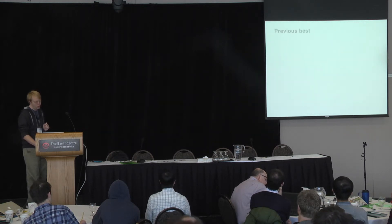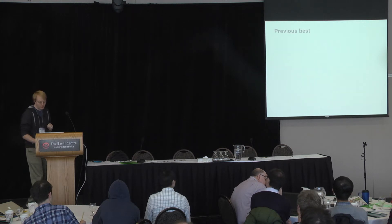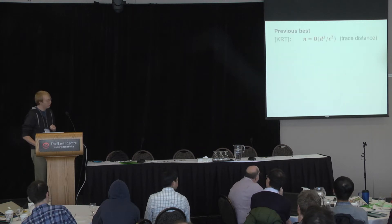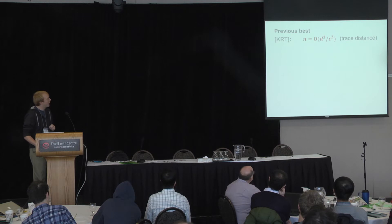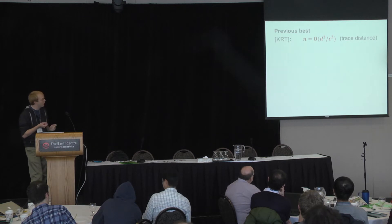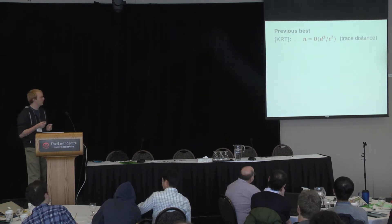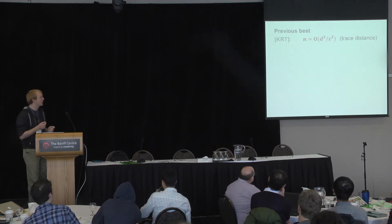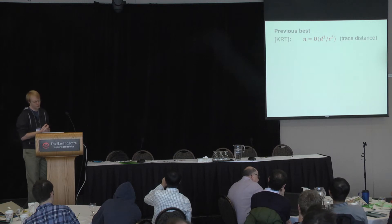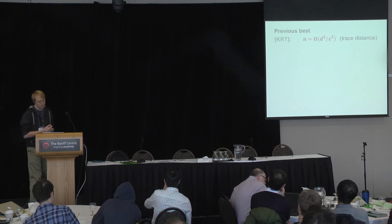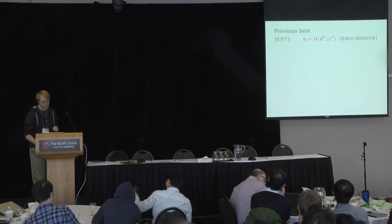Prior to these two papers, the previous best work, due to KRT, showed that if you want to get an epsilon-accurate estimate in terms of trace distance, then it suffices to use d cubed over epsilon squared copies — so a quadratic bound.